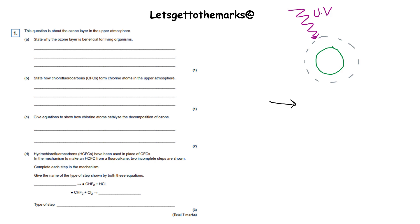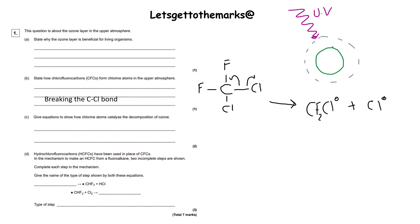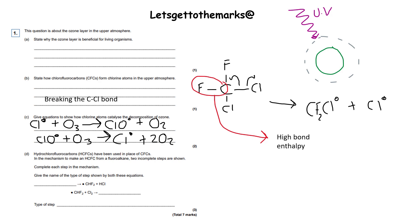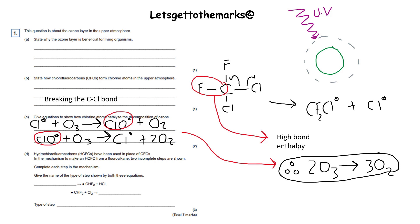State how CFCs form chlorine atoms in the upper atmosphere. The carbon-chlorine bond absorbs ultraviolet radiation and splits by homolytic fission. Part C: give the equations to show how chlorine atoms catalyze the decomposition of ozone. These are the two equations — the chlorine radical breaking down ozone to form a ClO free radical and an oxygen molecule, and then the ClO free radical from the first propagation reaction going on to react with a second ozone molecule, reforming the chlorine free radical and two more oxygens.